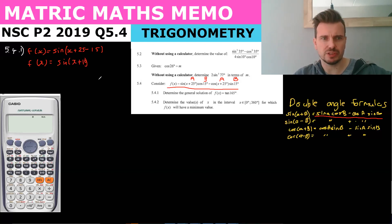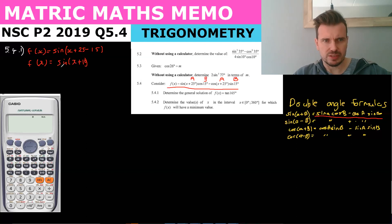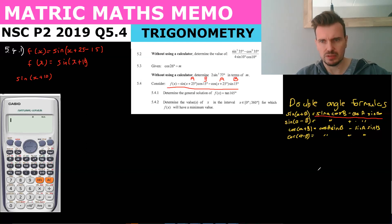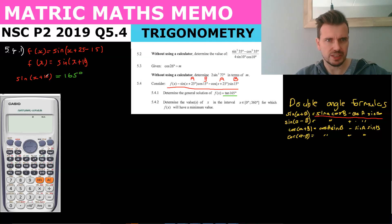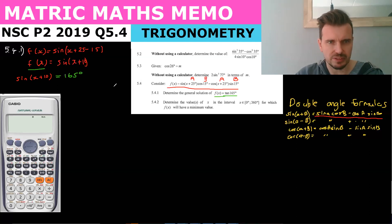They want the general solution of f(x) = tan(165). We know f(x) = sin(x + 10), so we can write sin(x + 10) = tan(165). tan(165) is just a number, so we need to evaluate it.